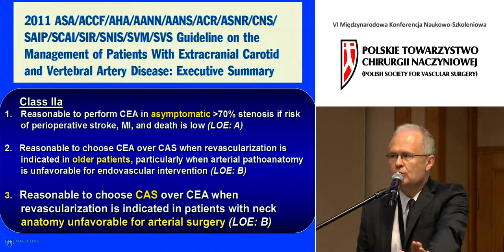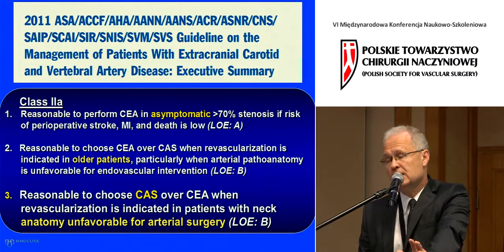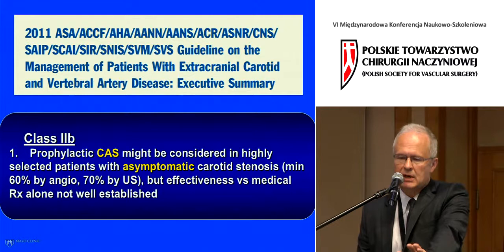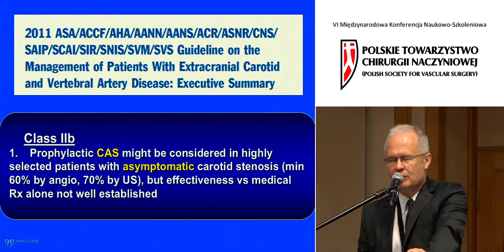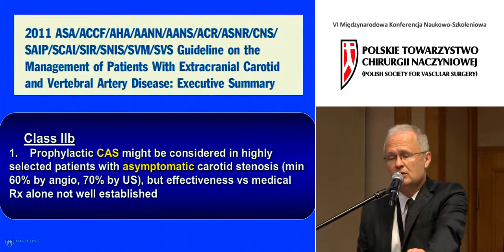Guidelines give the same Level of Evidence B for choosing stenting over surgery for patients with high risk of neck-related complications. There is also a lower level of evidence suggesting it could be reasonable to perform endovascular treatment for asymptomatic patients with stenosis of 60–70% by ultrasound, but the guidelines acknowledge we really don't know the benefit because we don't know the current medical treatment outcomes. That concludes my presentation, and I'd like to invite you to the discussion.